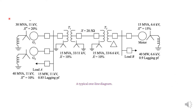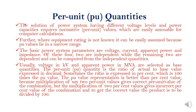In the power system, large values of power and voltage are used — such as 30 MVA at 11 kV, or 33 MVA at 40 MW. If we use such large values, the calculations become more complicated. In order to simplify the calculations, we have to use the per-unit quantities. The solution of power systems having different voltage levels and power capabilities requires normalized values, i.e., per-unit values, which are easily amenable to computer calculation.